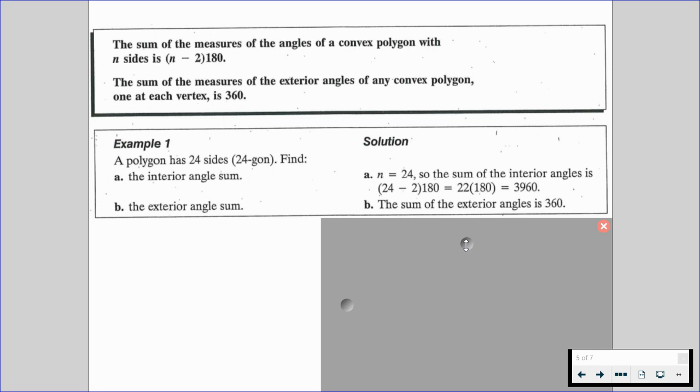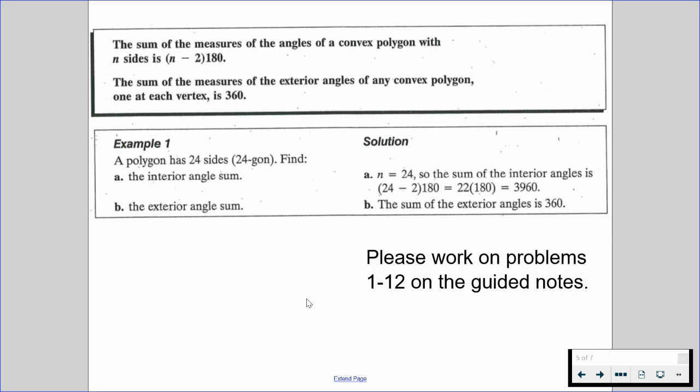And the sum of the exterior angles will always be 360 degrees. Always. And remember, the exterior angle is going to be if we extend the sides, but we're always going to end up with 360 degrees as the sum of our exterior angles. With this in mind, please work on problems 1 through 12 on the guided notes and resume when you're ready to move forward.